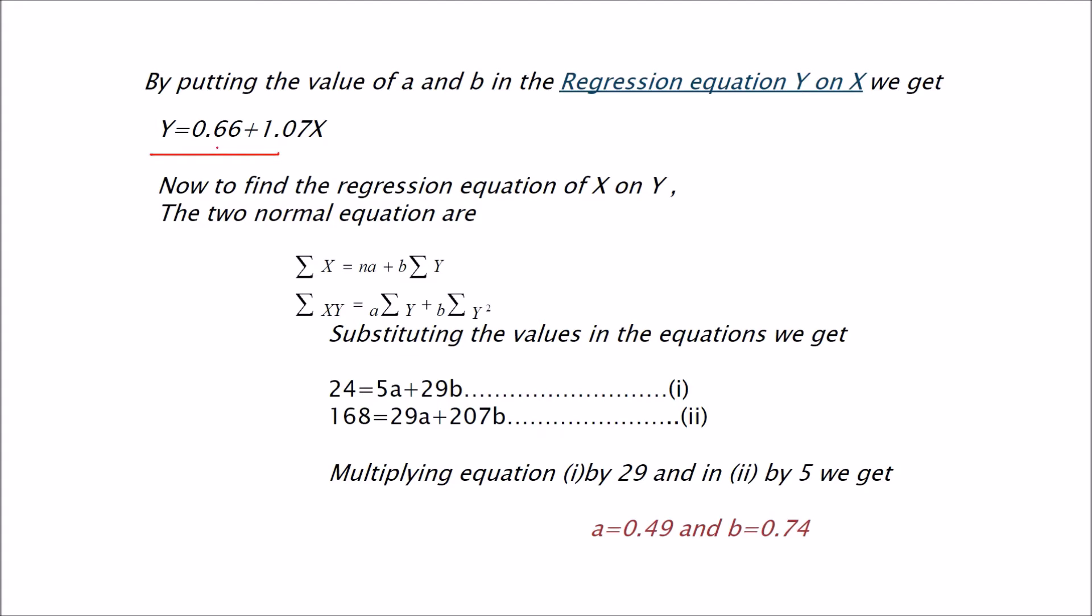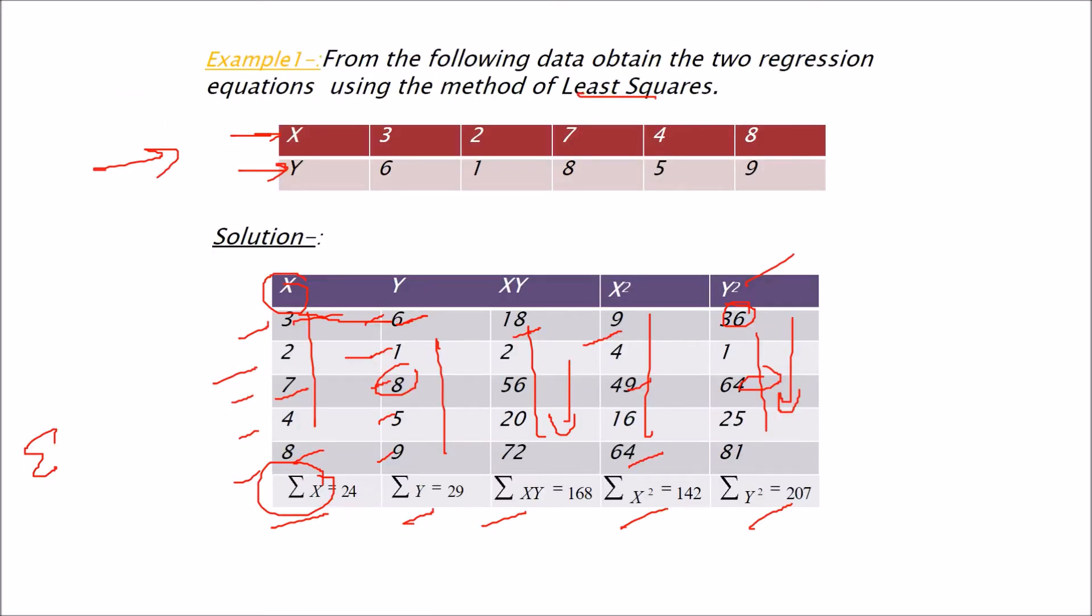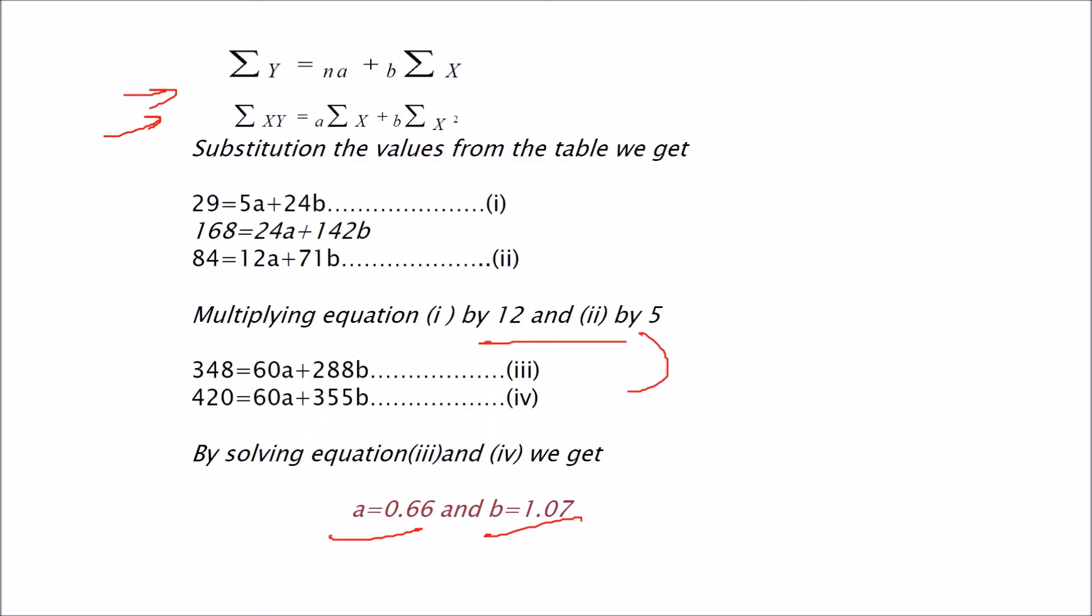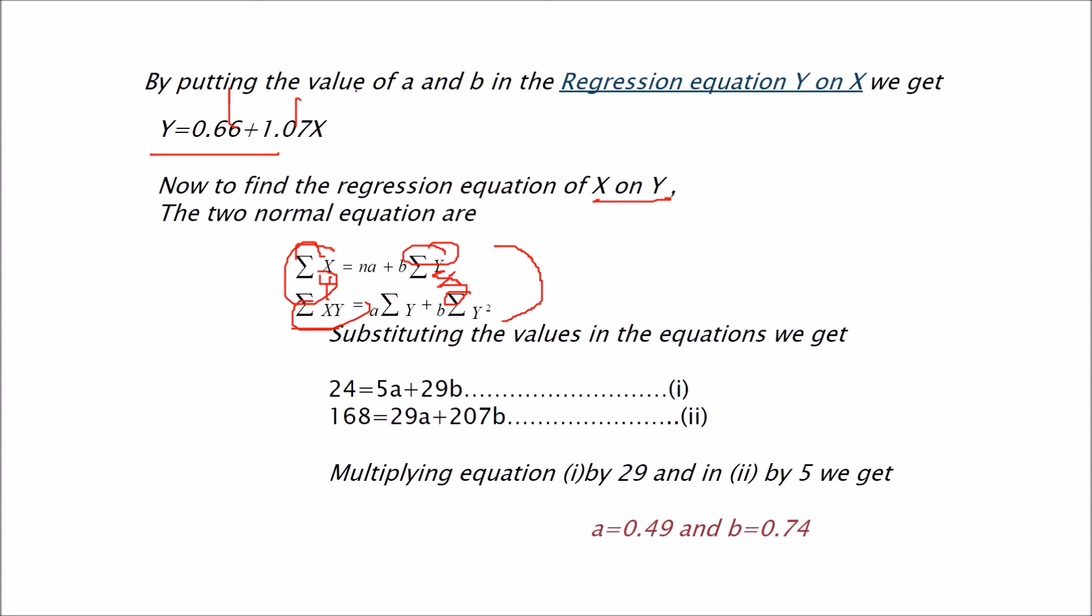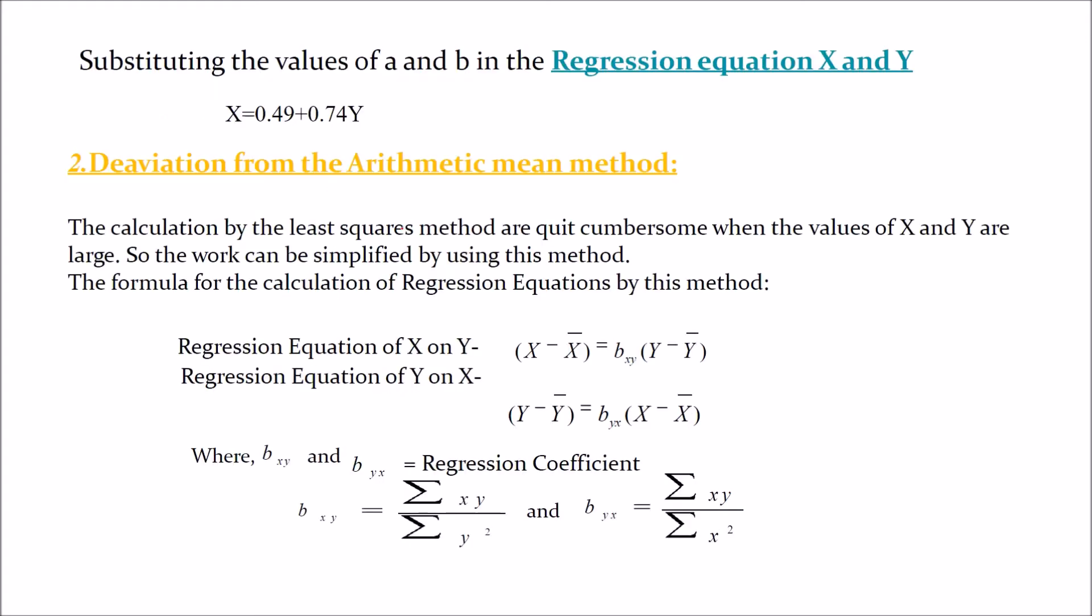Now just place this value on Y equals A plus BX. A is this, B is this. Now you want me to find out the regression equation of X on Y. The expression changes like this. This will be sigma X equals NA plus B sigma Y. See, previously Y was here, X was there. We have changed it now. Sigma XY equals A sigma Y plus B sigma Y square. And we have already computed these values from the table. A is 0.49, B is 0.74 by solving these two equations. And this is our equation of regression X on Y. I hope you got the idea.